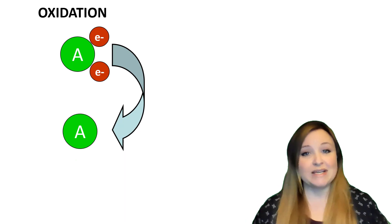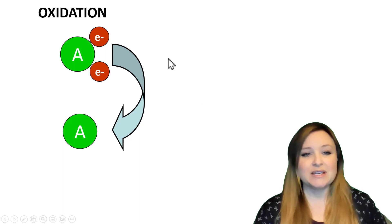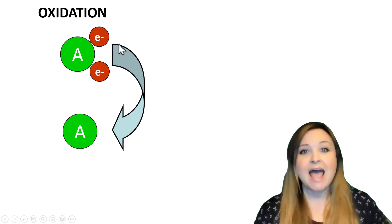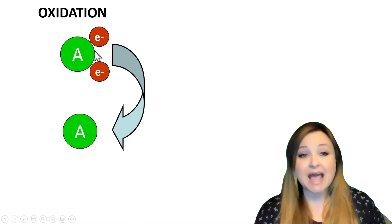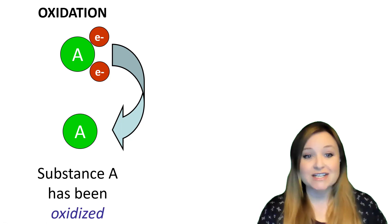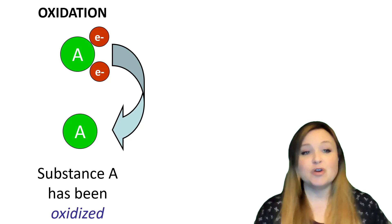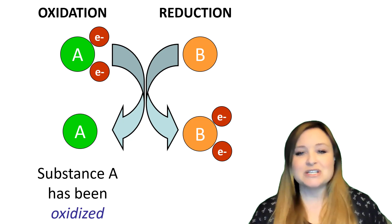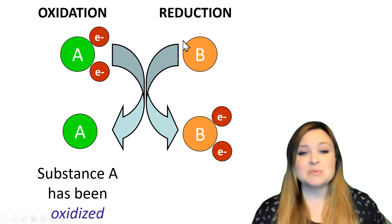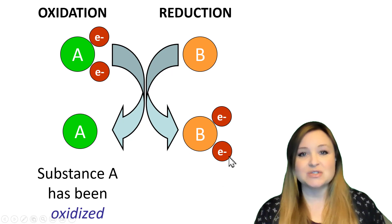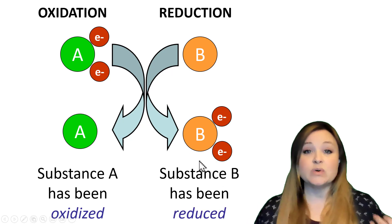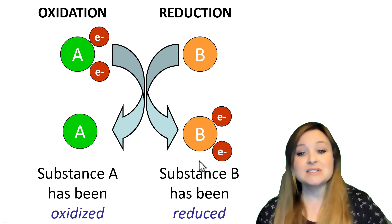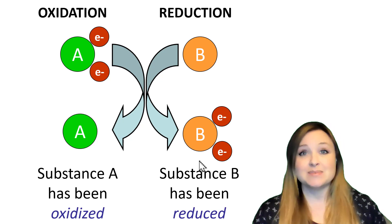Let's take a look at a visual way to explain oxidation and reduction. Here we have molecule A, which right now has its electrons. During this reaction, molecule A loses its electrons — loss of electrons is oxidation, so substance A has been oxidized. At the same time, those electrons have to go somewhere, so reduction happens as well. Substance B picks up those electrons lost from substance A, so substance B has been reduced.